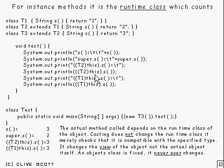For this, if you try and coerce this to being T2 or T1, it doesn't make any difference. You still don't change the runtime class. And, as I'm saying down here, the actual method called depends on the runtime class of the object. And casting, which is what's going on here, does not change the runtime class. It merely checks that it's compatible with the specified type in the cast.